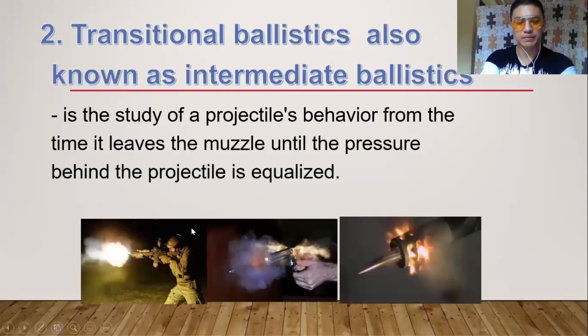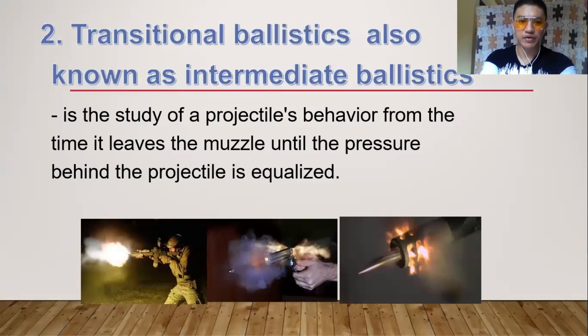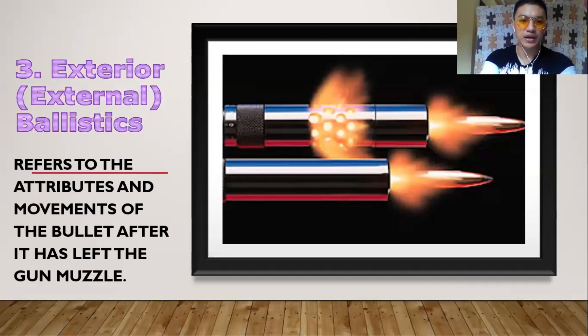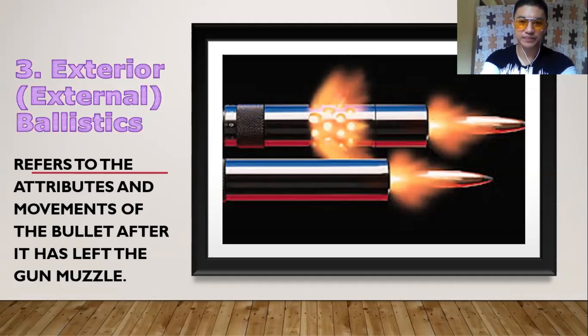The next branch is transitional ballistics, also known as intermediate ballistics. It is the study of the projectile's behavior from the time it leaves the muzzle until the pressure behind the projectile is equalized. It lies between internal ballistics and external ballistics. The next branch is exterior or external ballistics, which refers to the attributes and movements of the bullet after it has left the gun muzzle but after the reaction of transitional ballistics. A video is shown illustrating transitional ballistics followed by external ballistics.